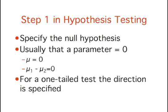The first step is to specify the null hypothesis. For a two-tailed test, the null hypothesis is typically that a parameter equals 0, although there are exceptions. Typical null hypotheses are mu equals 0 and mu1 minus mu2 equals 0. The latter is equivalent to mu1 equals mu2.